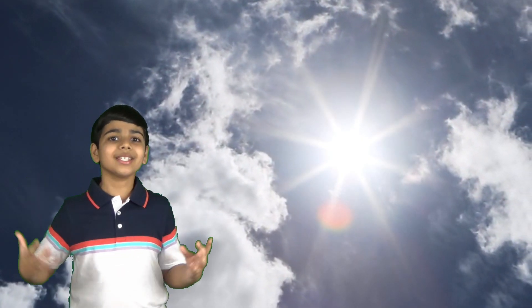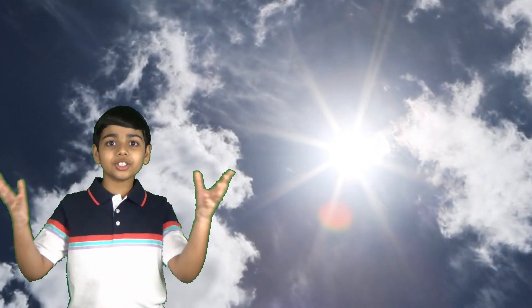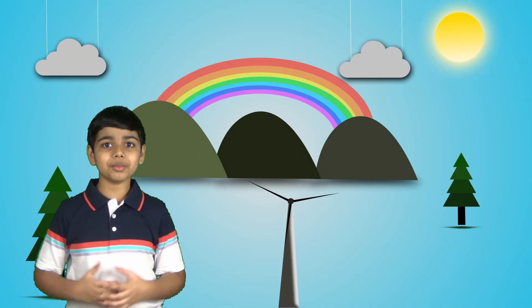In short, it all has to do with the sun. Most of the bright white light coming from the sun is actually made up from all of the colors of the rainbow.